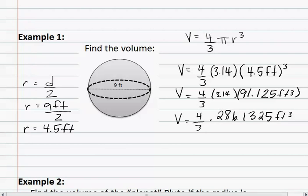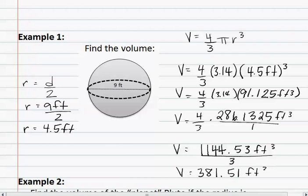We now multiply by the 3.14 to get 286.1325 feet cubed. Remembering that when we multiply by a fraction, we can put the other number over one and multiply the tops and the bottoms. When we multiply the top, we get 1,144.53 feet cubed all over three. We now divide to find the answer to be 381.51 feet cubed. This is the volume of the sphere.